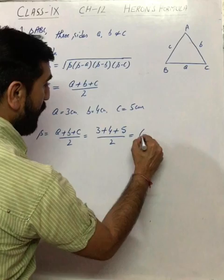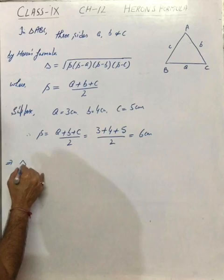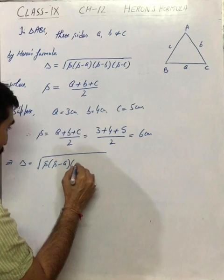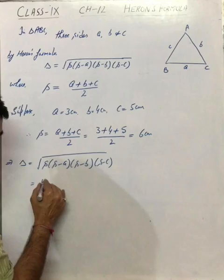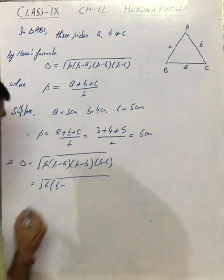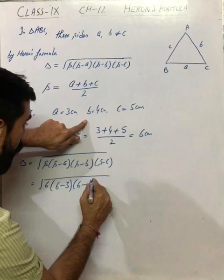So semi-perimeter is 6 centimeter. Let's apply the formula of area. It is square root of S, S minus A, S minus B, S minus C. Well, let's put it. S is 6, A is 3, S minus B is 6 minus 4, S minus C is 6 minus 5.